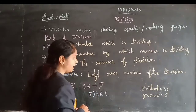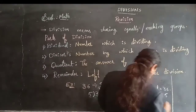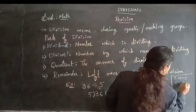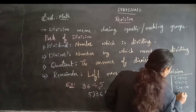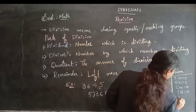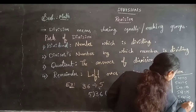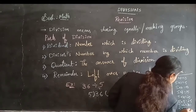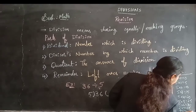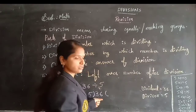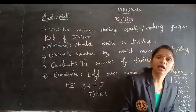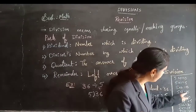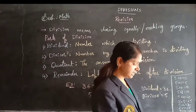Let's check if 36 comes in the 5 table or not. 5×0=0, 5×1=5, 5×2=10, 5×3=15, 5×4=20, 5×5=25, 5×6=30, 5×7=35, 5×8=40. Now 40 is bigger than 36, so 36 is not in the 5 table. We need to search for the number just bigger than 36 in the 5 table — that is 40.